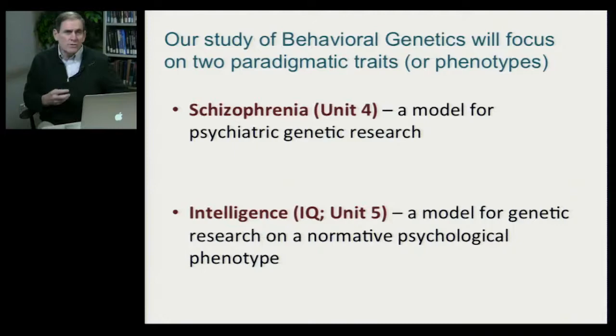The second trait that we'll focus on in Unit 5 is intelligence or IQ. This has generated a lot of controversy for the field of behavioral genetics, but it's certainly something worth discussing. IQ or intelligence is a representation of behavioral genetic research applied not to an either-or trait, but to a trait that's continuously distributed or quantitative.